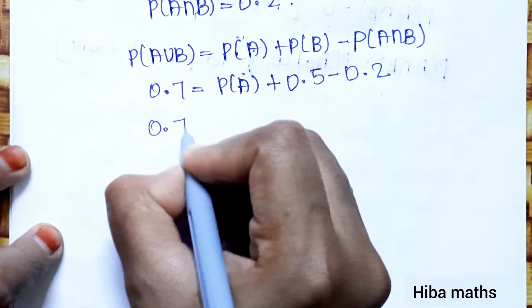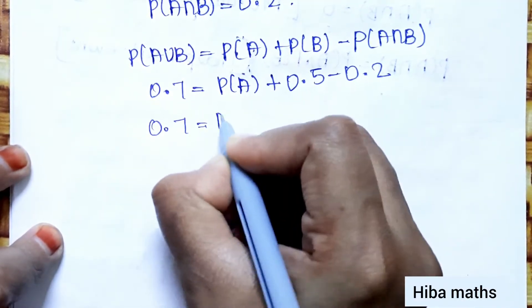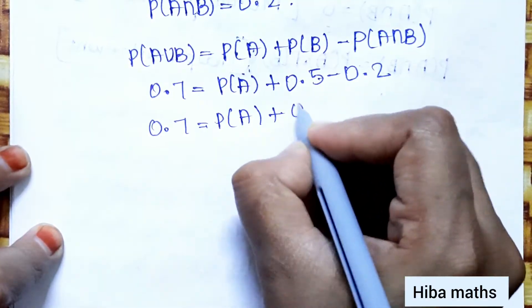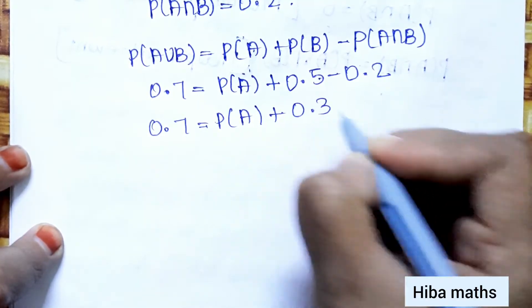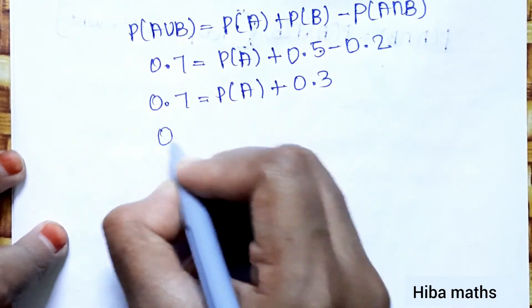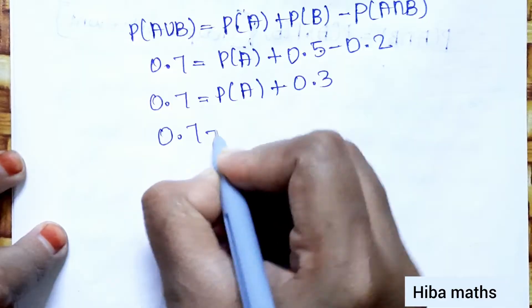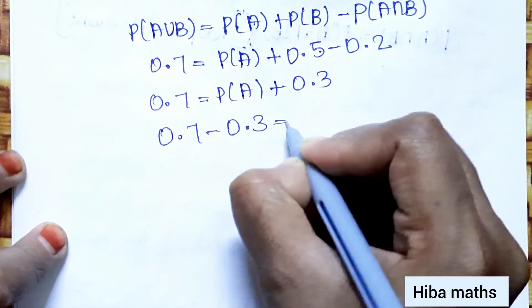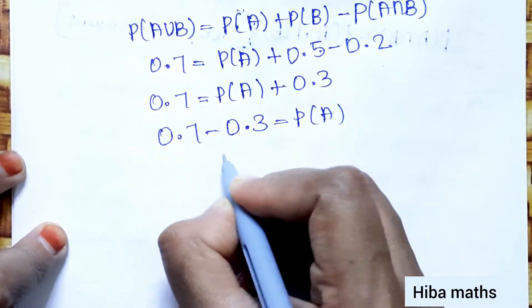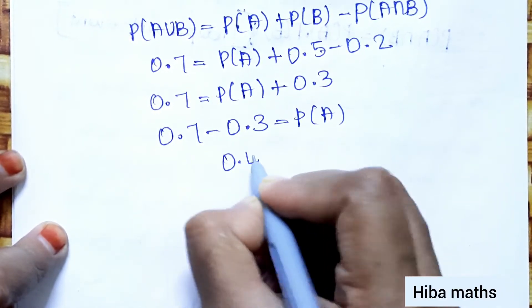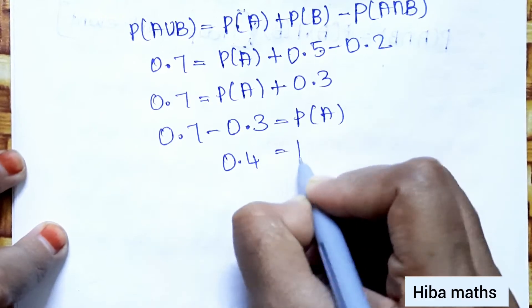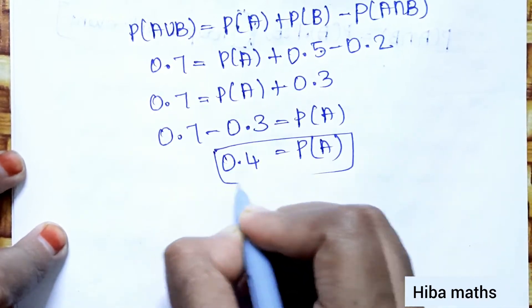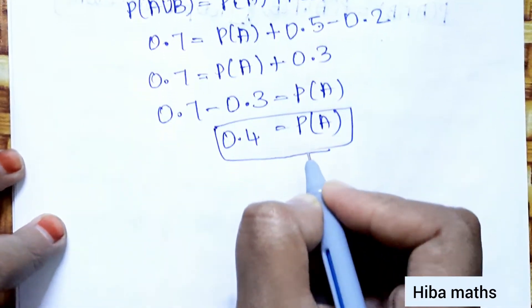So 0.7 = P(A) + 0.3. Therefore P(A) = 0.7 − 0.3 = 0.4. We have found P(A) = 0.4. Now we use this to prove the independence condition.